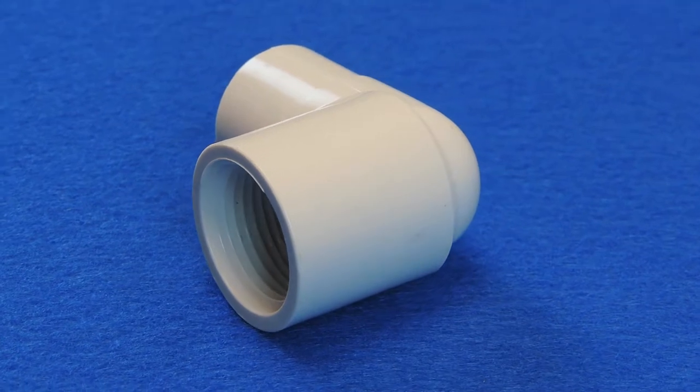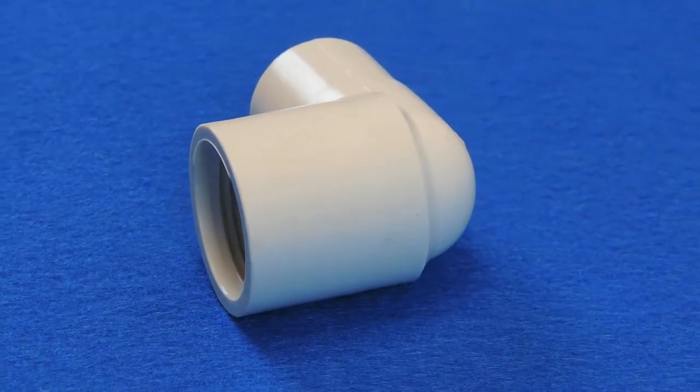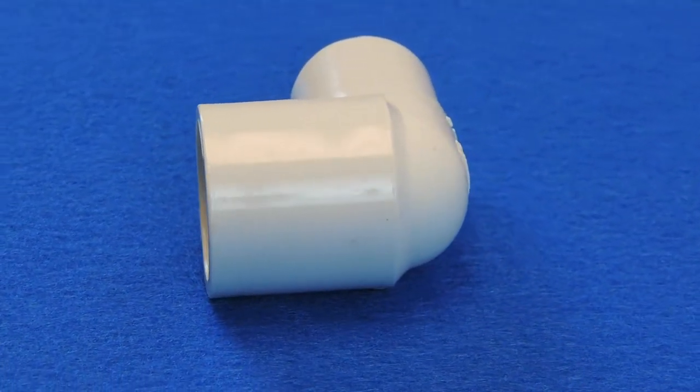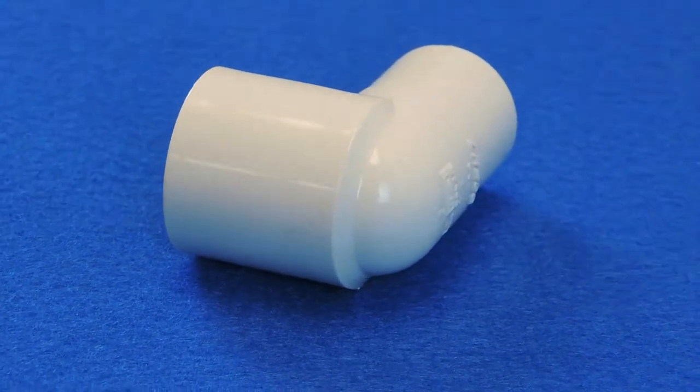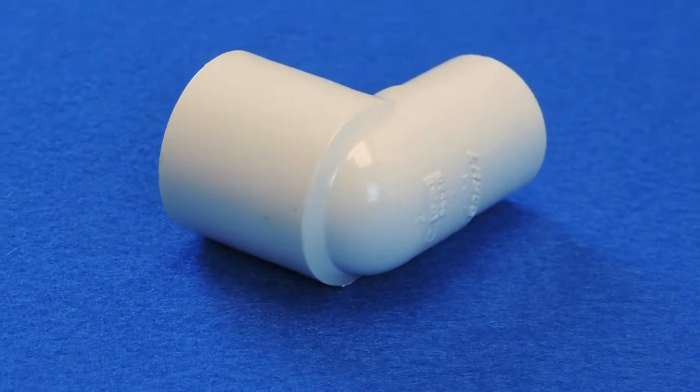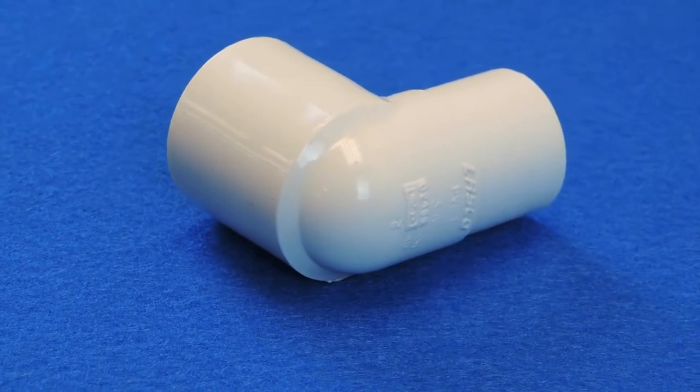One end of the fitting is meant to fit into another fitting. Street or spig fittings can typically be used in tighter quarters than regular elbows since no pipe nipple is required. It can be connected directly to another fitting without having to use an additional short connecting piece.